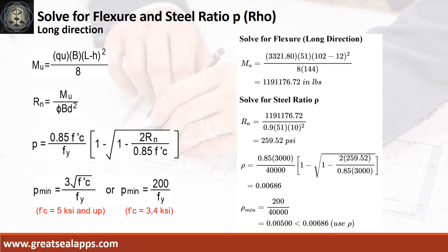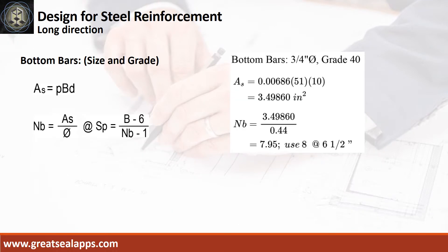Given resistance factor equals 0.9, B equals 51 inches, and D equals 10 inches, the beam design ratio RN equals 259.52 PSI, and reinforcement ratio rho equals 0.00686. Continuing at long direction, given rho equals 0.00686, B equals 51 inches, and D equals 10 inches, the area of steel for long direction bars is 3.4986 square inches, and the number of bars for 3/4-inch diameter is 8.